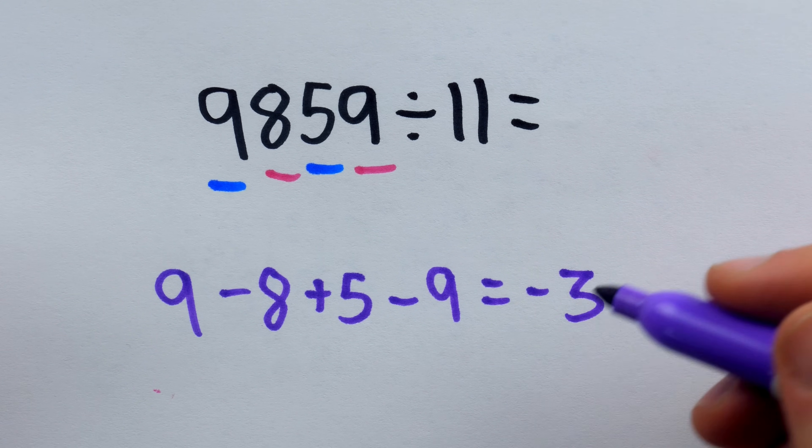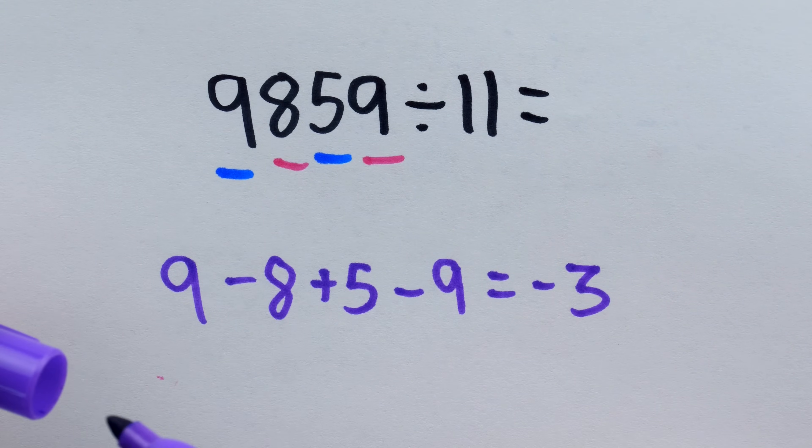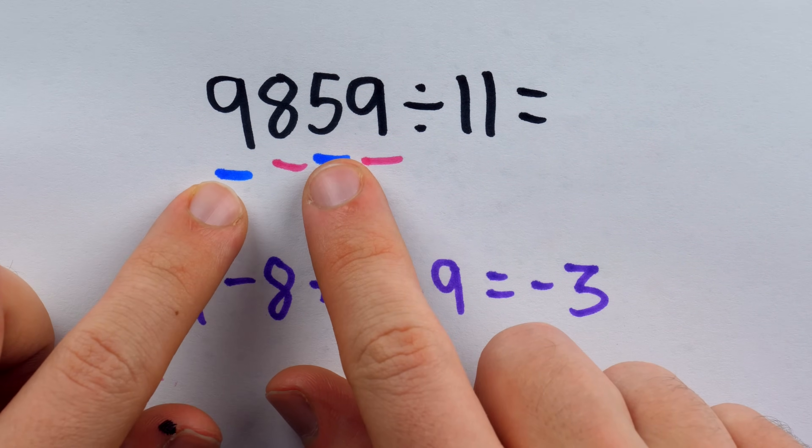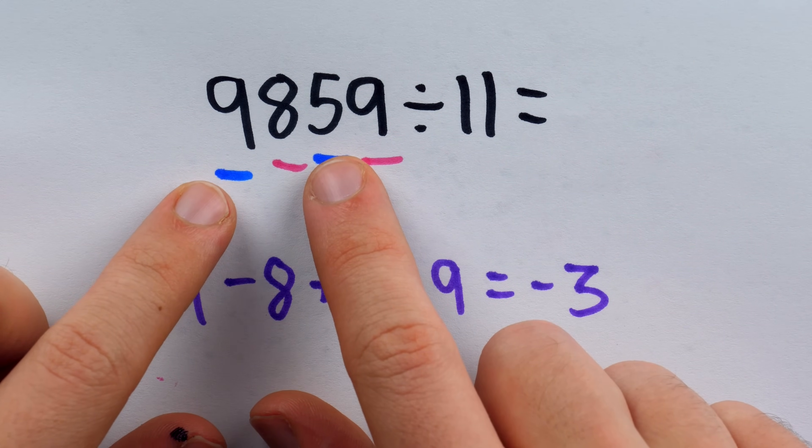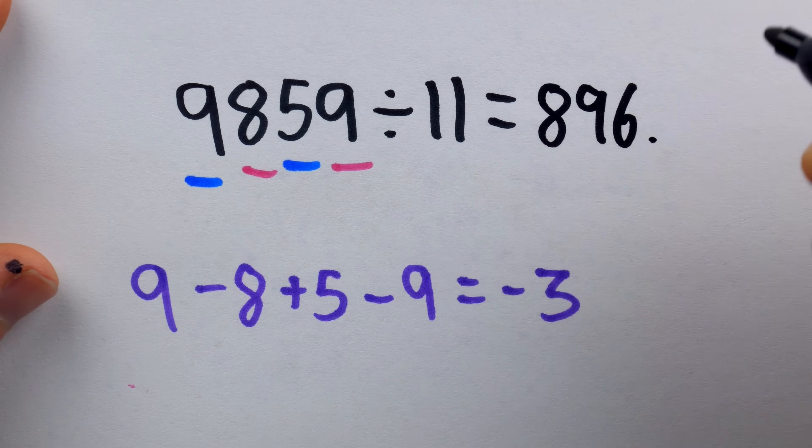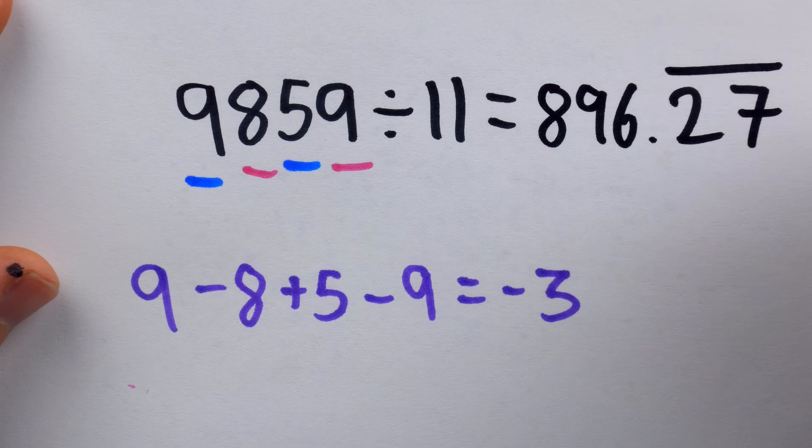So this division problem is not going to give us a whole number. 9,859 is not a multiple of 11. This turns out to be 896.27 repeating.